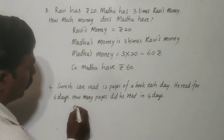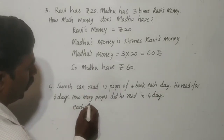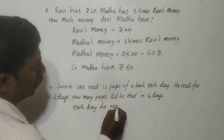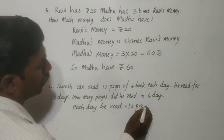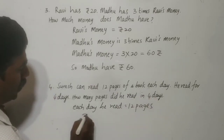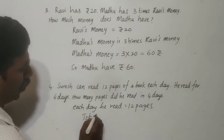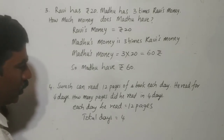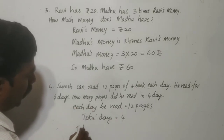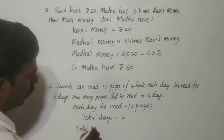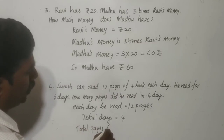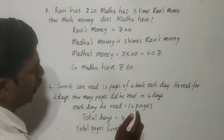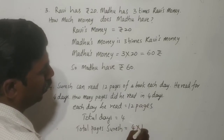You see, each day how many pages did he read? 12 pages. How many days did he read? 4 days. So, each day he read 12 pages. Total days: 4. So, total pages Suresh read — that means 4 into 12.